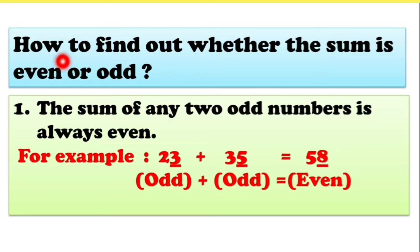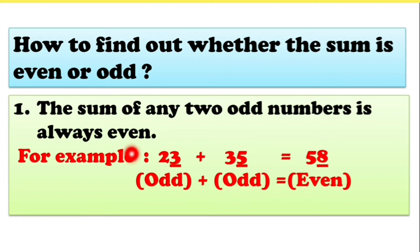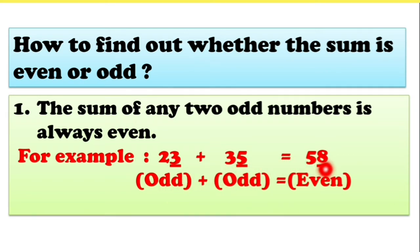Now I will teach you how to find out whether the sum is even or odd. The first point is: the sum of any 2 odd numbers is always even. For example, 23 — ones place is 3, so it is odd. If we add 35 — ones place is 5, also odd — we get 58. 58 is even because the ones place is 8. That means odd number plus odd number gives an even answer.